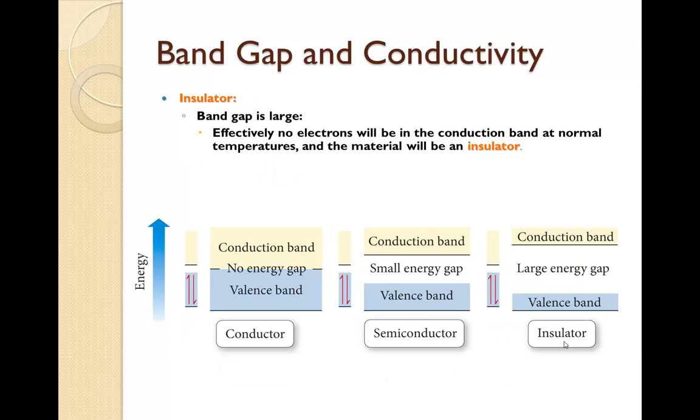In an insulator, the band gap is large. Effectively, no electrons will be in the conduction band at normal temperatures, and the material will then be an insulator.